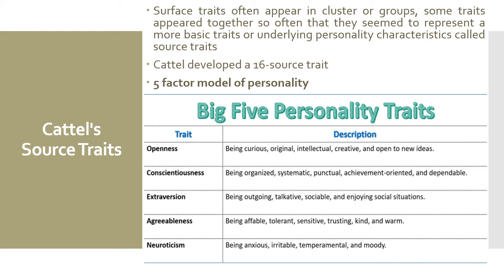Another major approach to trait theory is found in the work of Raymond B. Cattell. He wanted to learn how traits were linked and began by studying visible aspects of personality, or surface traits. He obtained data on surface traits of a large number of people, analyzed the data and observed that surface traits often appear in clusters or groups. Some traits appear together so often that they seem to represent a basic or underlying personality characteristic called a source trait. Cattell developed a list of 16 source traits that provide a description of a person's personality. According to the five-factor model of personality, personality can be understood in terms of five innate universal dimensions which are stable over time and have important consequences across the lifespan. These five traits are a reduction of Cattell's 16 source traits or personality factors.